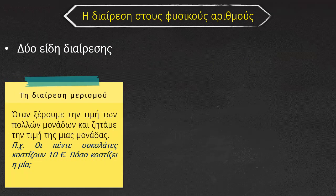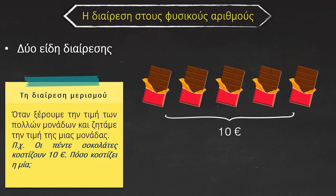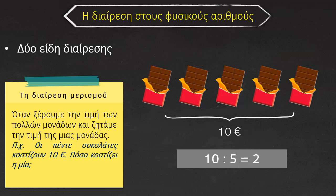Έχουμε δύο είδη διαίρεσης. Ξεκινάμε με το πρώτο είδος, τη διαίρεση μερισμού. Όταν ξέρουμε την τιμή των πολλών μονάδων και ζητάμε την τιμή της μίας μονάδας. Παραδείγματος χάρη, οι 5 σοκολάτες κοστίζουν 10 ευρώ, πόσο κοστίζει η μία. Έχουμε 5 σοκολάτες, όλες μαζί κοστίζουν 10 ευρώ. Άρα παίρνω τα 10 ευρώ, τα μοιράζω σε 5 μέρη όσες είναι οι σοκολάτες και βρίσκω ότι κοστίζουν 2 ευρώ.